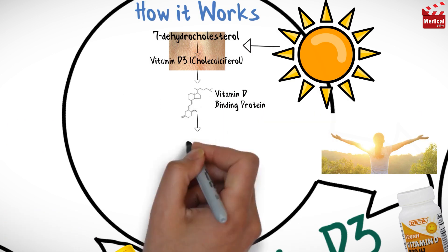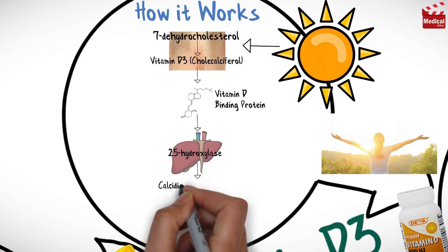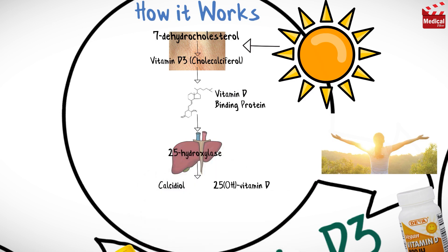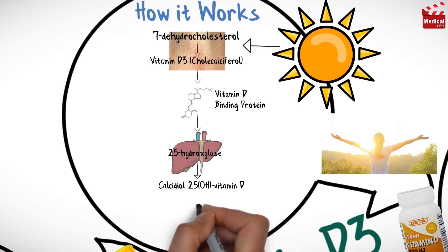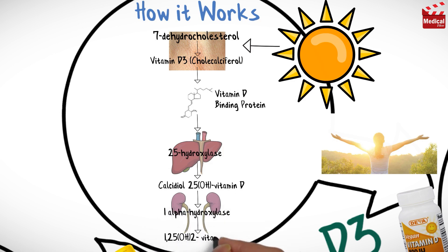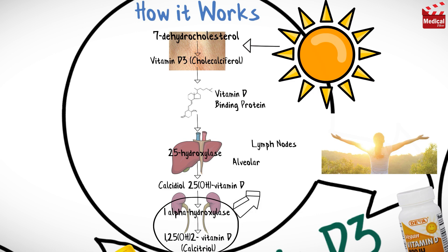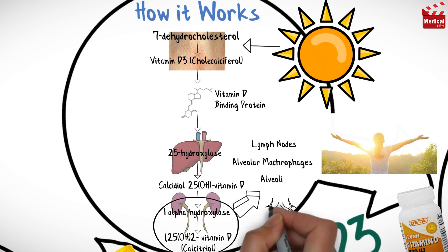Vitamin D3 is then transported to the liver and converted by 25-hydroxylase to calcidiol, also known as 25-hydroxyvitamin D. It is subsequently converted by 1-alpha-hydroxylase in the kidney to the most active form, 1,25-dihydroxyvitamin D (calcitriol). This process also takes place in different tissues and cells in the immune system, such as lymph nodes, alveolar macrophages, and alveoli themselves.